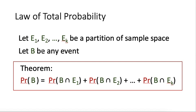Now consider any event B. The theorem says that the probability that B occurs can be computed as the sum of the following probabilities: probability of B intersecting E1, probability of B intersecting E2, and so on, up to the probability of B intersecting EK.